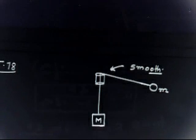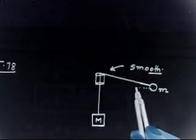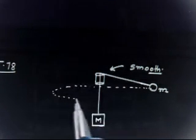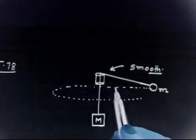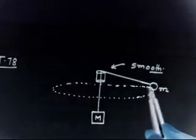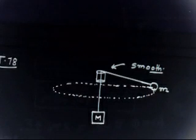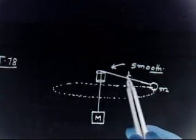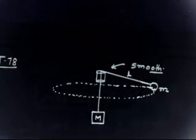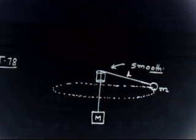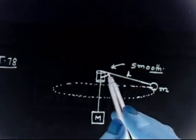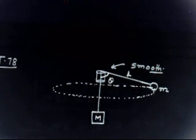The mass m moves in a circular path which lies in a horizontal plane. So this mass is moving in a circular path. The question says the length of the string from mass m to the top of the tube is L — so this length is L — and theta is the angle this length makes with the vertical. So this angle is theta.